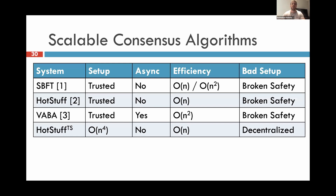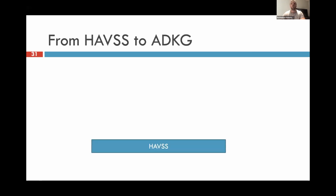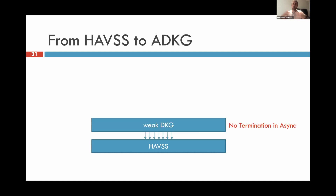Using HAVSS and plugging it into Hybrid DKG is already enough to remove the trusted setup assumption from HotStuff and SBFT, giving a fully decentralized partially synchronous consensus protocol with a very efficient fast path after the bootstrapping phase. The next step is achieving a fully asynchronous distributed key generation. The lower layer is HAVSS. In full asynchrony, we know that we cannot terminate due to FLP impossibility. So what we do is forfeit termination — our DKG actually cannot always terminate. However, it can sometimes be consistent, and when it is, we use it to harvest some randomness from it.